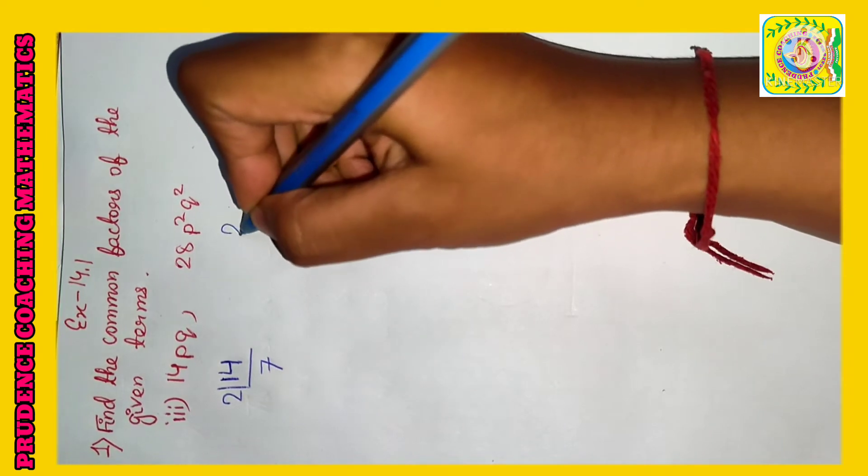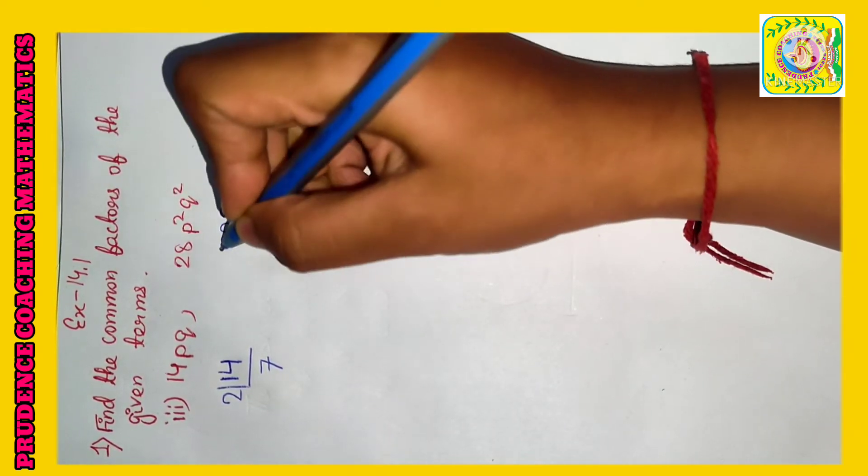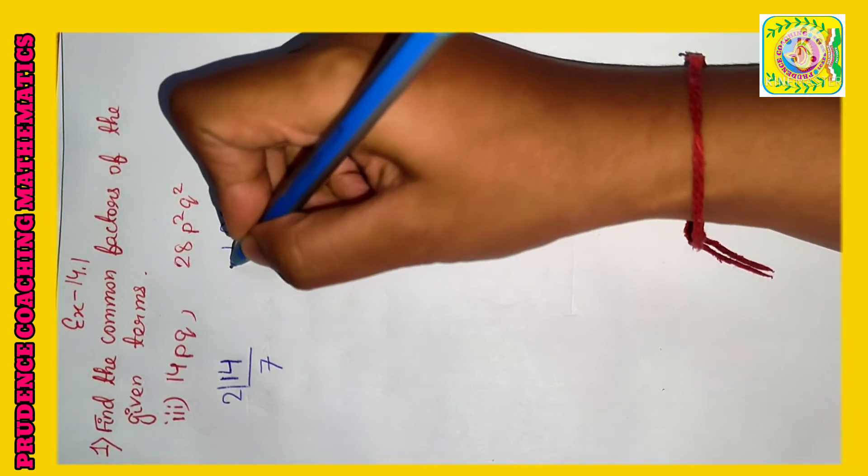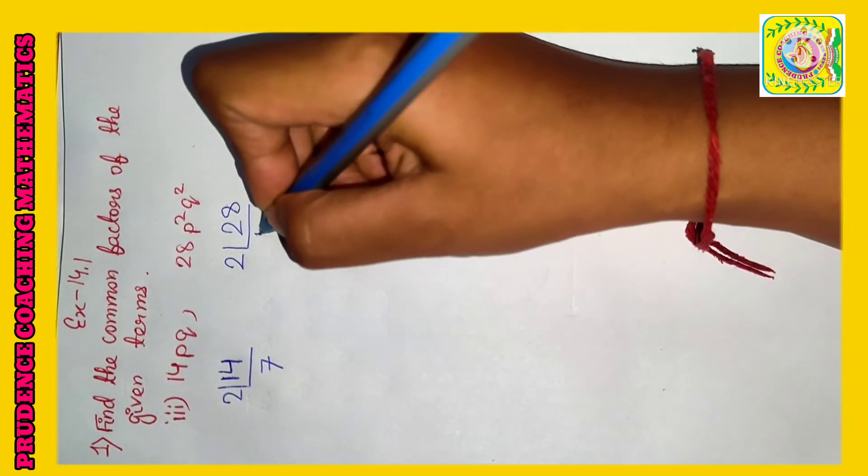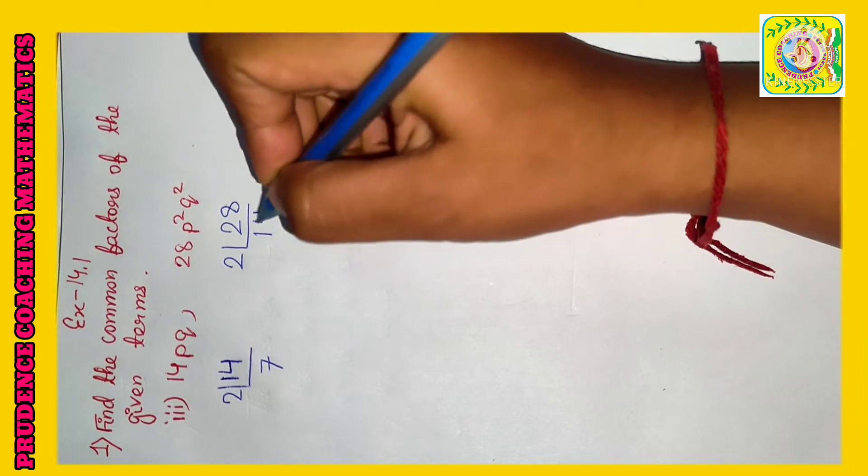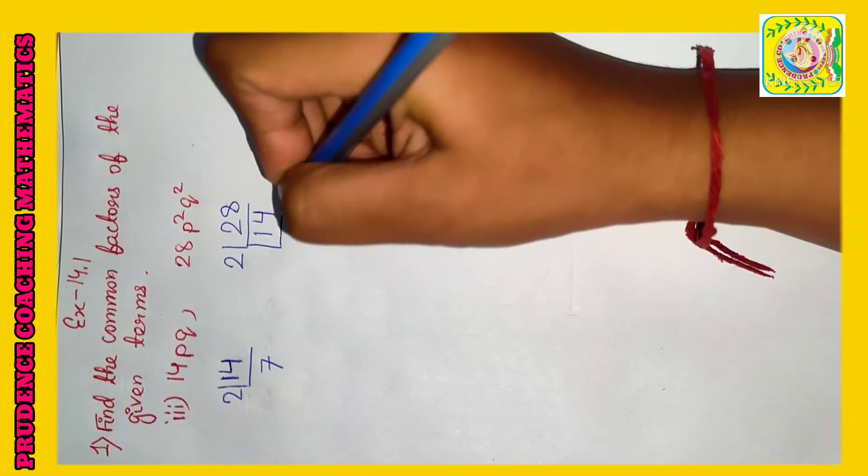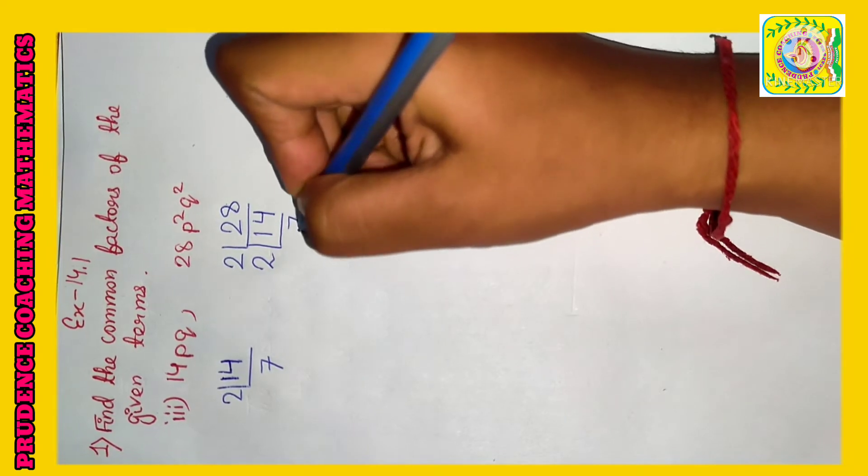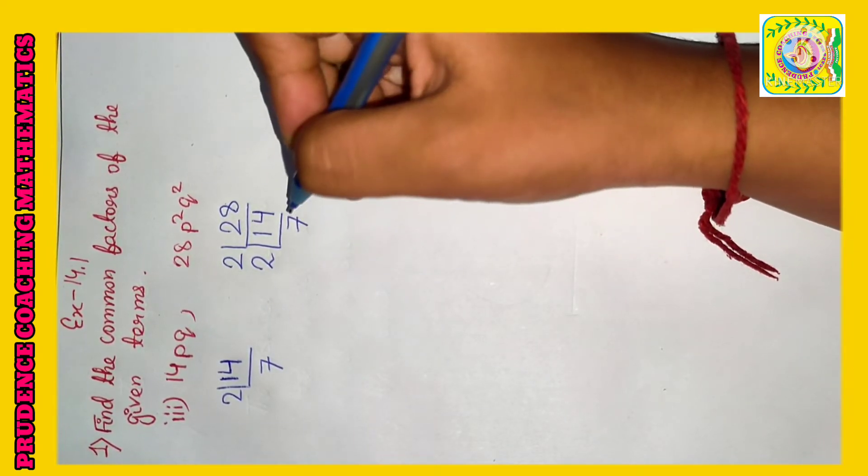So let's start with 28. As 28 is divisible by the smallest prime number 2, we will divide it by 2, we will get 14. Now 14 is also divisible by 2, so divide it by 2, we will get 7. As 7 is a prime number, we need to stop here.